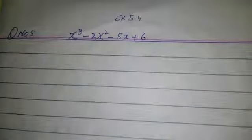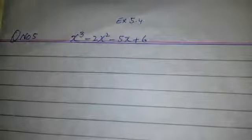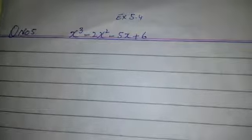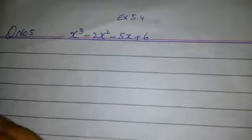We are solving exercise 5.4, question number 5: x³ - 2x² - 5x + 6. Factorize with the help of factor theorem. Let's solve it.